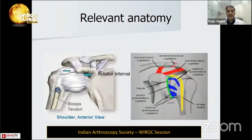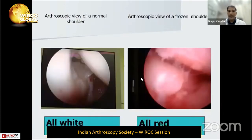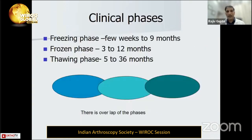Anatomically, there is contracture in the rotator cuff interval with thickening of the capsule and the middle and inferior glenohumeral ligament. You can easily appreciate this: normal tissue appears white, and if it is red and inflamed, it is frozen shoulder.